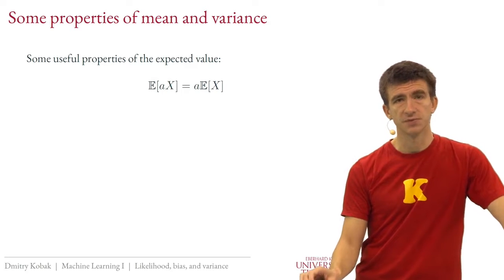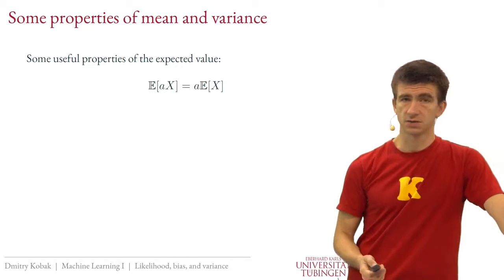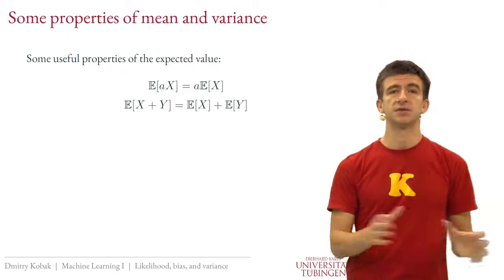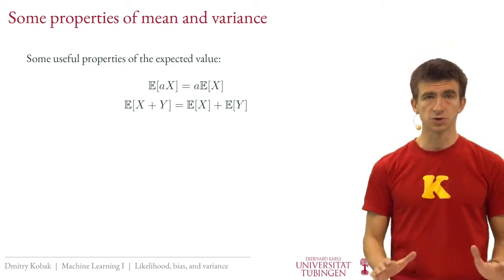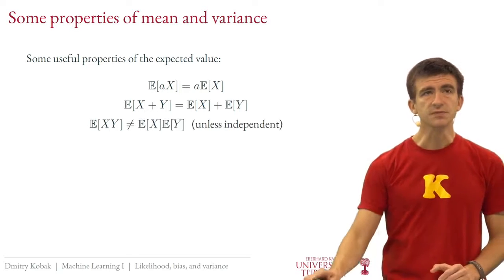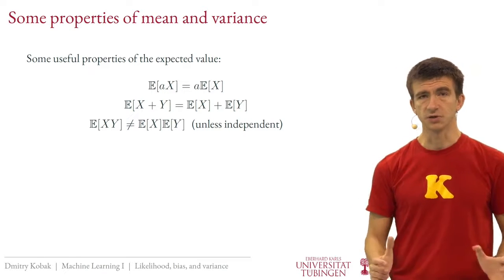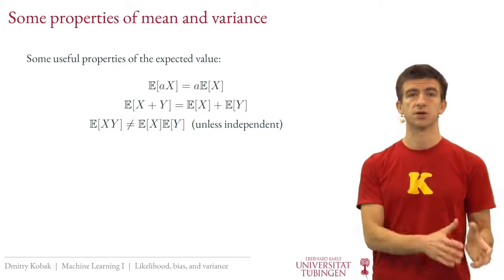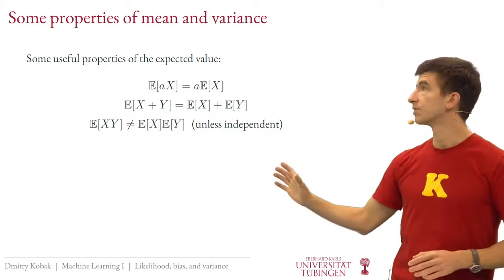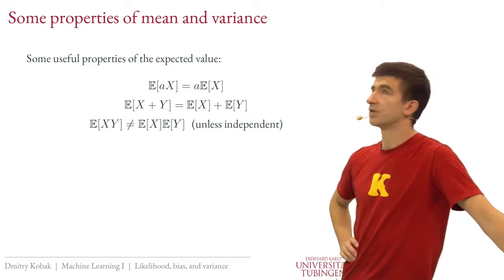Let's look at some useful properties of the mean and variance. If you multiply a random variable by a constant, the expected value gets multiplied by the same value. If you add two random variables, you can also add their expected values — expectation is a linear operation. However, for products, the expected value of a product of two random variables is generally not equal to the product of expectations. But if the variables are statistically independent, this does hold, and this can be taken as a definition of independent random variables.